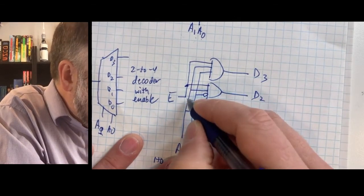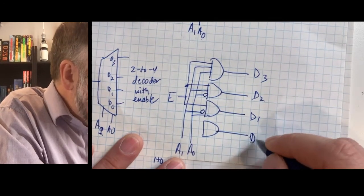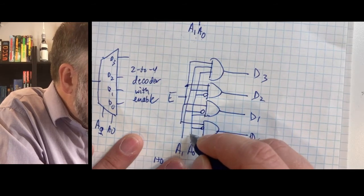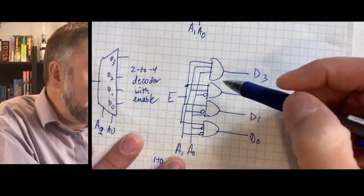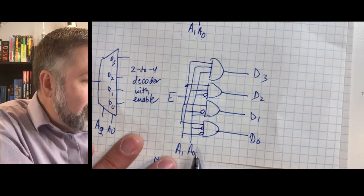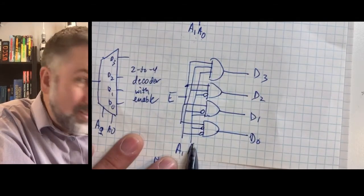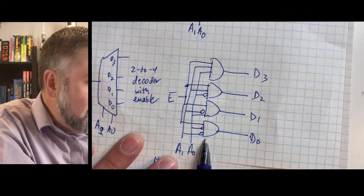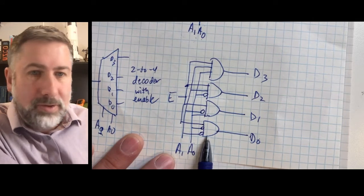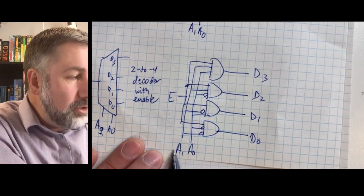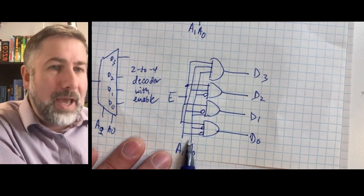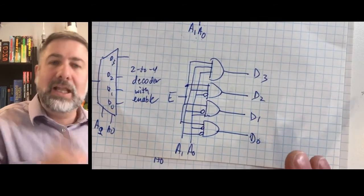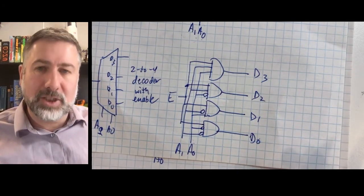And D0 is enable·A0-prime·A1-prime. So you can see we've got an AND gate for every minterm, and the term it represents is determined entirely by which inputs are inverted on the AND gate. This is a decoder — it takes an encoded binary representation and makes a decoded 1-of-n representation, allowing us to select one of a set of possible outputs.